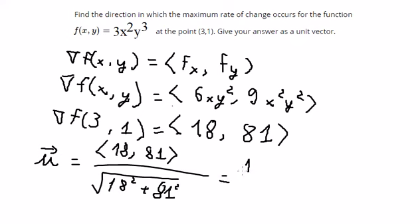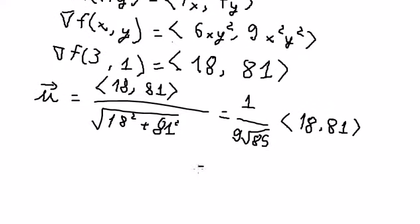So you get 1 over 9 multiplied with the square root of 85. So we have 18 over 9 multiplied with the square root of 85.